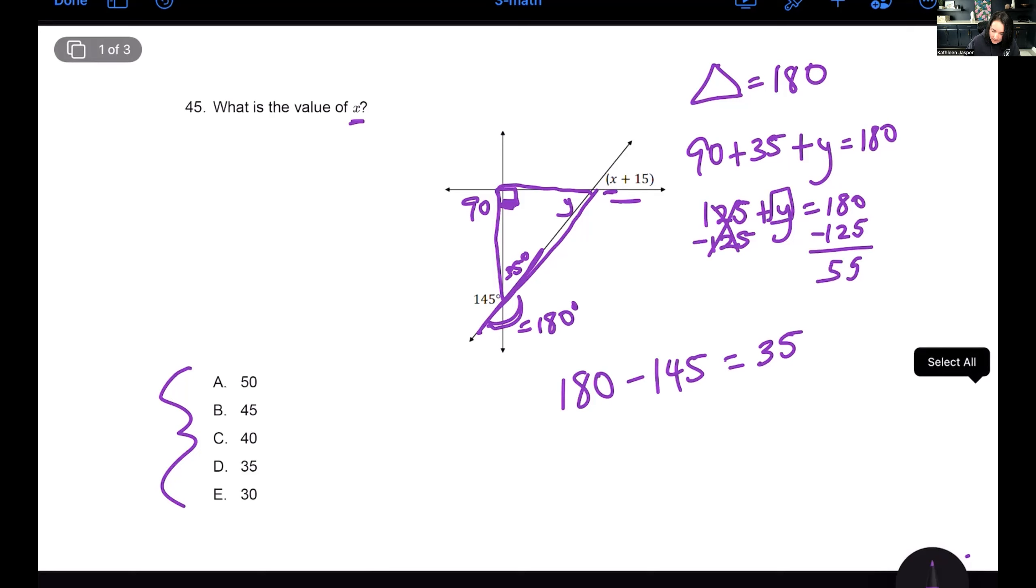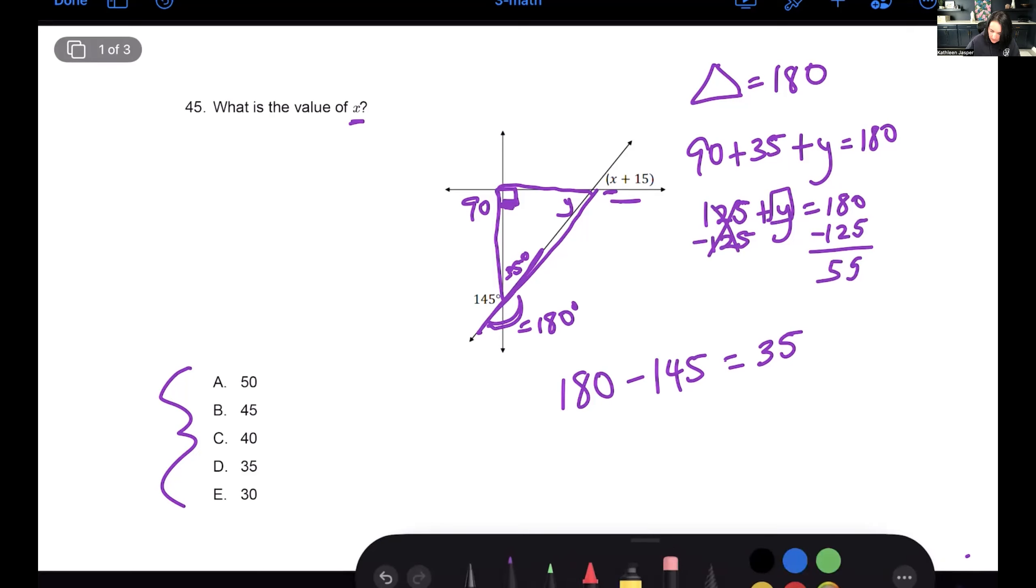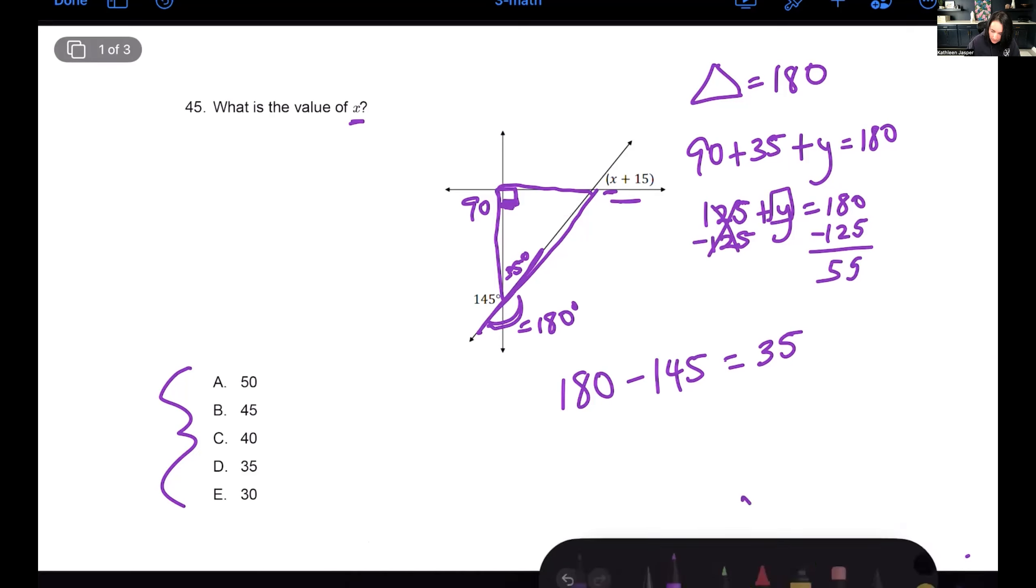Just because an angle looks like it's 90 degrees on the test, they will indicate it with that little box. So right now I have 90 degrees plus 35 degrees plus y, I don't know what that is, equals 180. So 90 plus 35 plus this y here equals 180. So now all I need to do is take 90 plus 35 and I get 125 plus y equals 180.